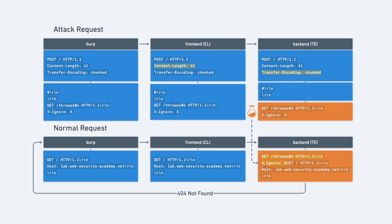It's very important not to add a new line after the X-Ignore header, because you want the GET slash request for the front page to be appended right after it. If you add a carriage return line feed, the backend reads in two separate request methods — a GET for the nonexistent resource and a GET for the front page on separate lines — which is not a valid request, and it would reply with an invalid request error. That's why we don't set a new line there.